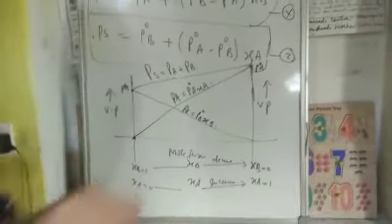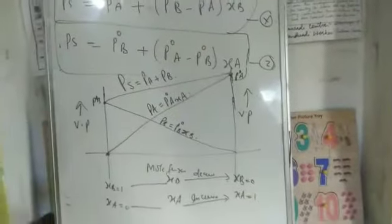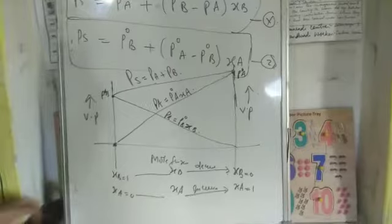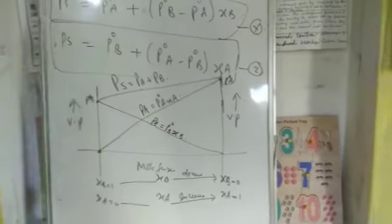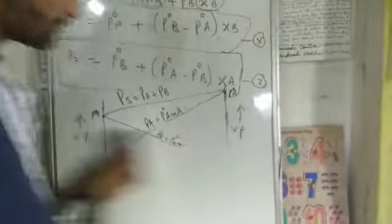After that, I am combining the vapor pressure of both components A as well as B. It becomes P is equal to P0A plus P0B. This is the vapor pressure versus mole fraction graph, and now I am going to explain what is the relationship between Dalton's law of vapor pressure and Raoult's law.